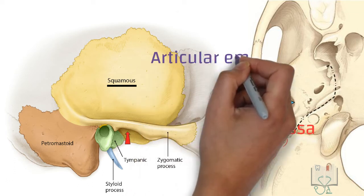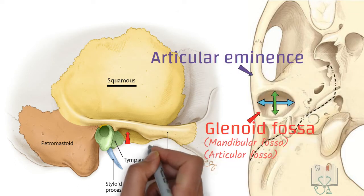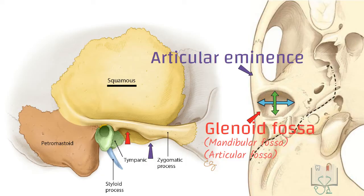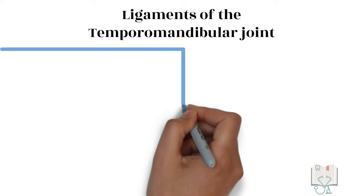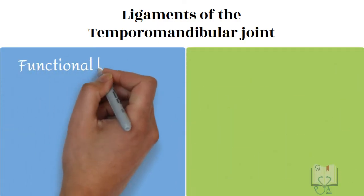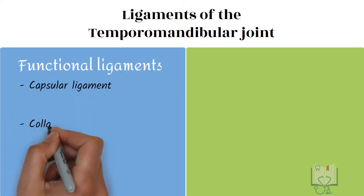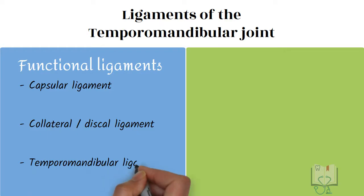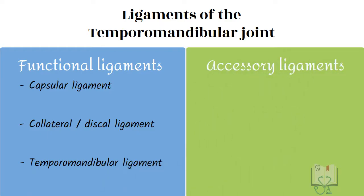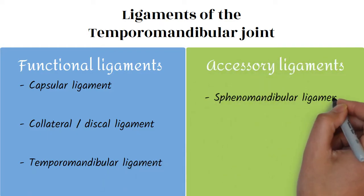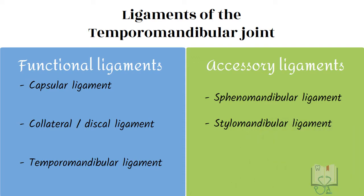The articular eminence, a convexity located just anterior to the glenoid fossa, forms the other part of the articulating surface of the temporal bone. The ligaments of the temporomandibular joint can be classified into two types: functional ligaments — which include the capsular ligament, collateral ligament or discal ligament, and temporomandibular ligament — and accessory ligaments — which include the sphenomandibular ligament and the stylomandibular ligament.